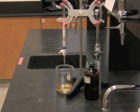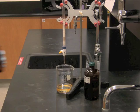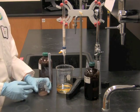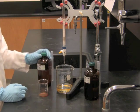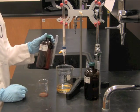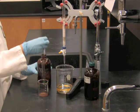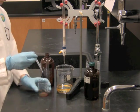Once your column is ready, you can get your very dry sample out of the fume hood. We're going to reconstitute that with just a little bit of the same solvent that we used before, the petroleum ether and dichloromethane. We're only going to use about one or two milliliters to do that.